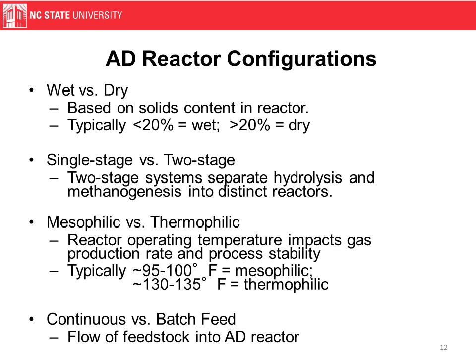When it comes to reactor configurations, there are four overarching design choices that define the type of anaerobic digestion reactor you have. Is the system wet or dry based on solids content? Is it single stage versus two stage? The methane production process has four phases — are you handling that in one tank or two separate tanks? Mesophilic versus thermophilic refers to the temperature range, which impacts system stability and potentially the rate of gas production. And then continuous versus batch feed — do you have a pipe constantly pumping in new feedstock, or are you adding new feedstock every several hours or days?